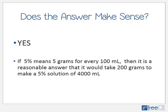Does the answer make sense? Yes — if 5% means 5 grams for every 100 milliliters, then it's reasonable that 200 grams would be needed to make a 5% solution of 4000 milliliters.